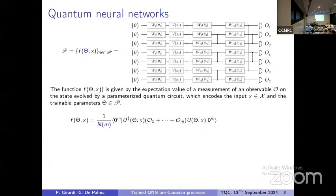Let me now define the model we are going to consider. We start from an initial fixed state, apply a parameterized circuit layer by layer, encoding trainable parameters using parameterized gates and making qubits interact. We are also free to encode the input of the machine learning problem using other parameterized gates wherever we want. At the end of the circuit, we have an observable which is a sum of single-qubit terms; the total number of qubits is called m. The output — the function generated by the quantum neural network — is the expectation value of the observable computed on the final state, up to a normalization I will introduce shortly.